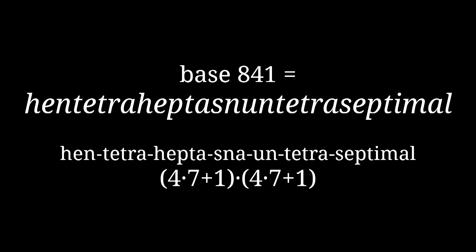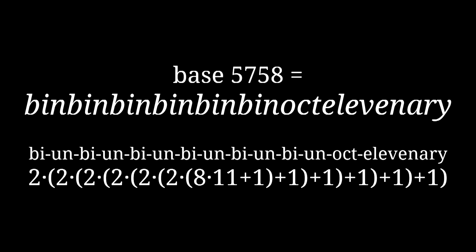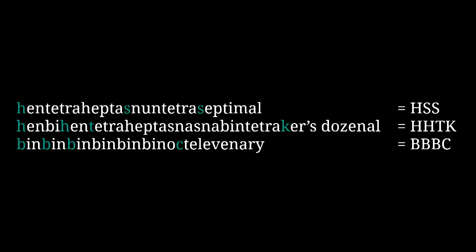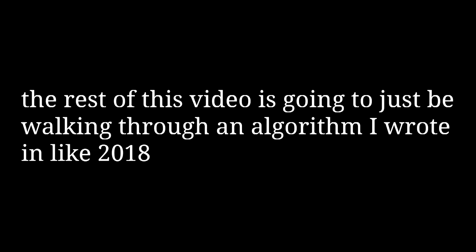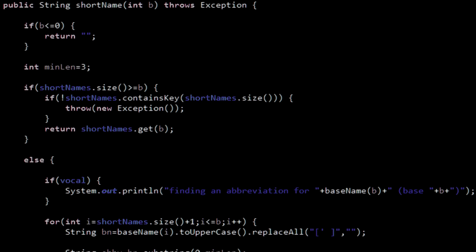One thing you've definitely noticed is just how long these names can get. The reason people who commonly use base 16 call it hex isn't so it can have its own base-neutral name — it's because hexadecimal is just too long to say every time. So to go along with this base-naming system, I've also come up with a system for abbreviating these base names. Unlike the naming system itself, this is not designed to be an algorithm a human could do by hand. I haven't really described how this works anywhere, so to close out this video, I'll do that here.